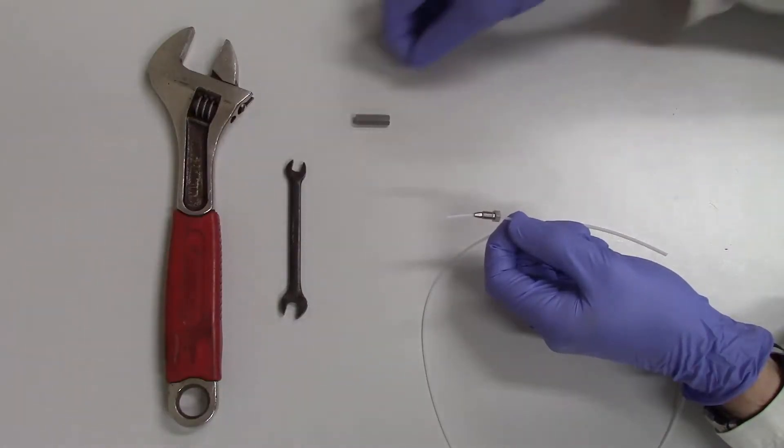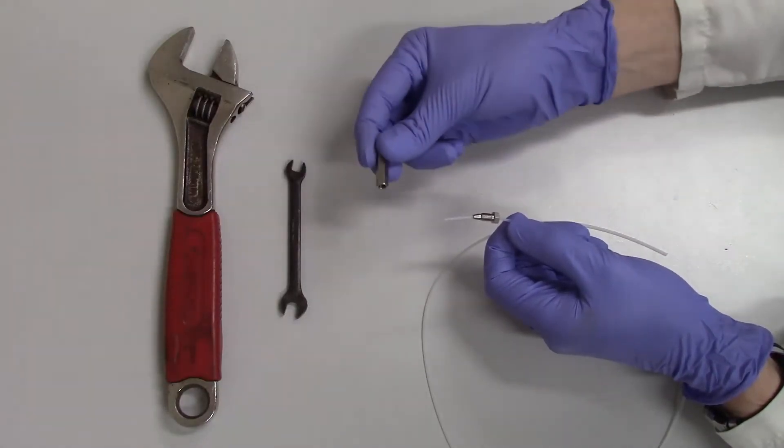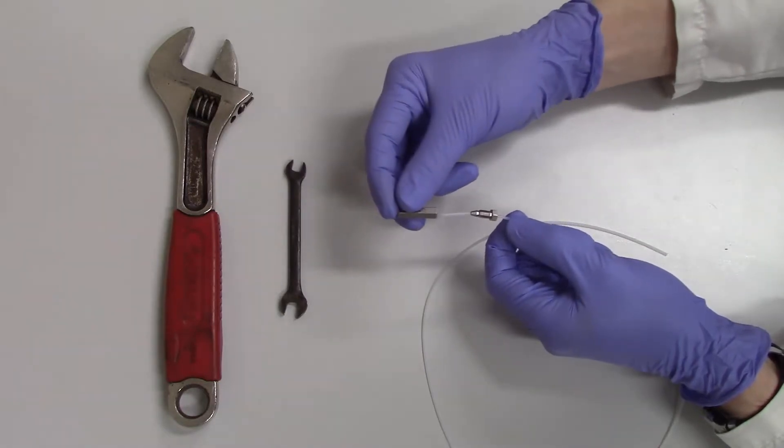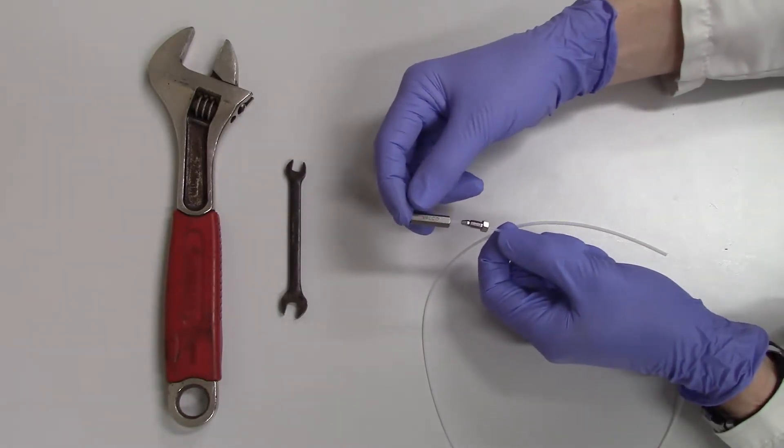Third, guide the tubing into the extra connection piece. While applying pressure to keep the tubing in place, push the ferrule and nut into the socket and hand tighten.